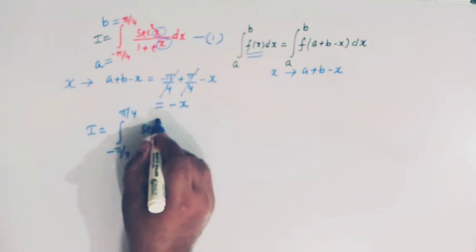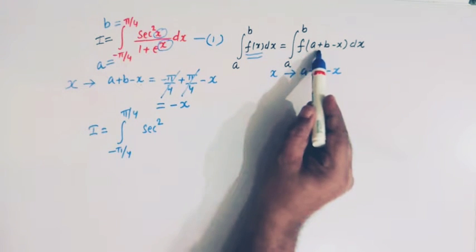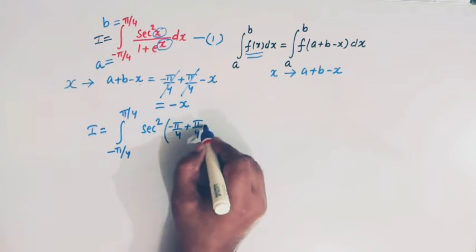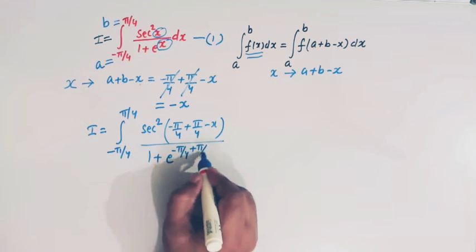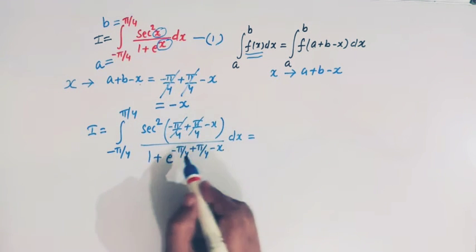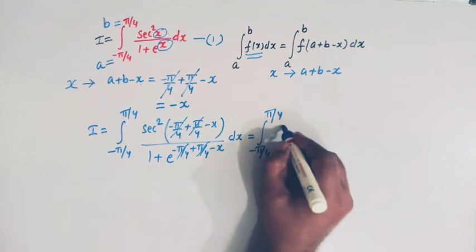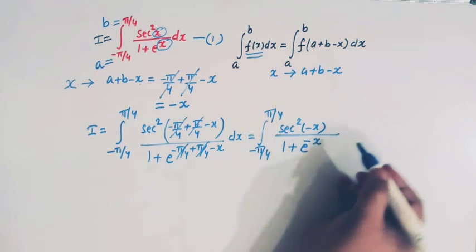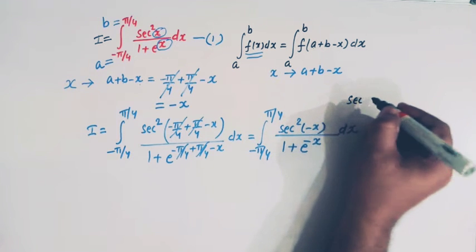So now I can be expressed as the integral from minus pi by 4 to pi by 4, where the x is replaced by a plus b minus x as per this property. We have sec squared of (minus pi by 4 plus pi by 4 minus x) divided by 1 plus e raised to (minus pi by 4 plus pi by 4 minus x), all times dx. These pairs cancel, and we are left with the integral from minus pi by 4 to pi by 4 of sec squared(minus x) divided by 1 plus e raised to minus x, times dx.